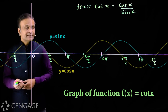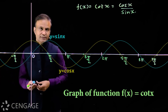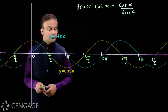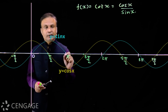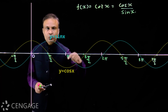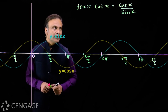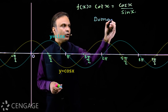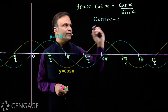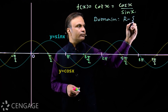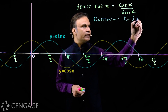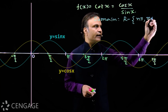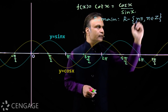Let's look at the graph of function f(x) = cot(x). Cot(x) is cos(x) divided by sin(x). This function is defined for non-zero values of sin(x). sin(x) is zero when x is equal to nπ — integral multiples of π. So the domain of cot(x) will be all real numbers excluding the set of numbers of type nπ, where n belongs to the set of integers.